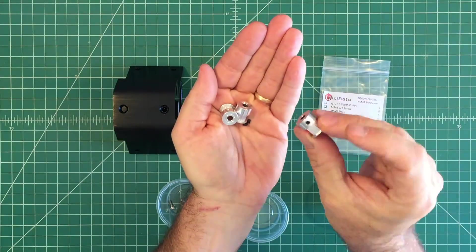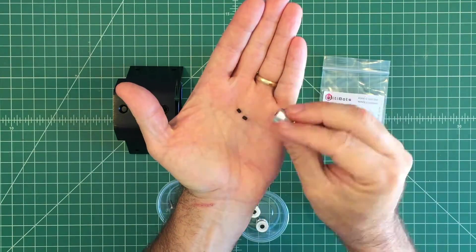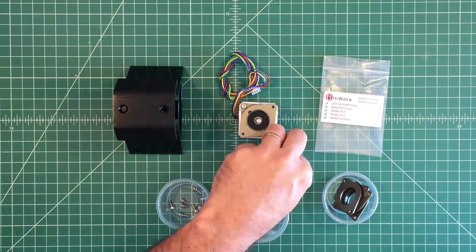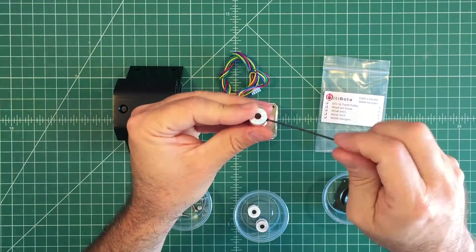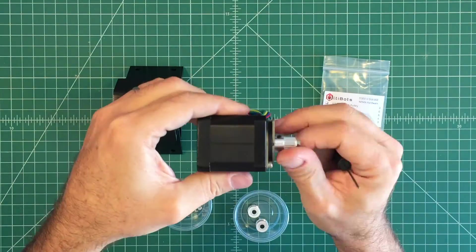Examine each GT2 pulley for missing set screws and install them with a 1.5 metric driver. Position the GT2 pulley on the NEMA motor loosely.